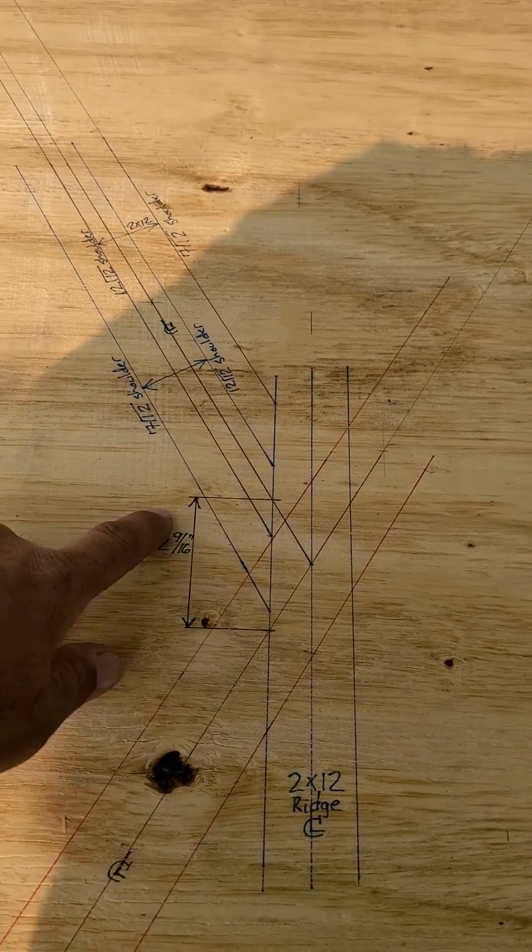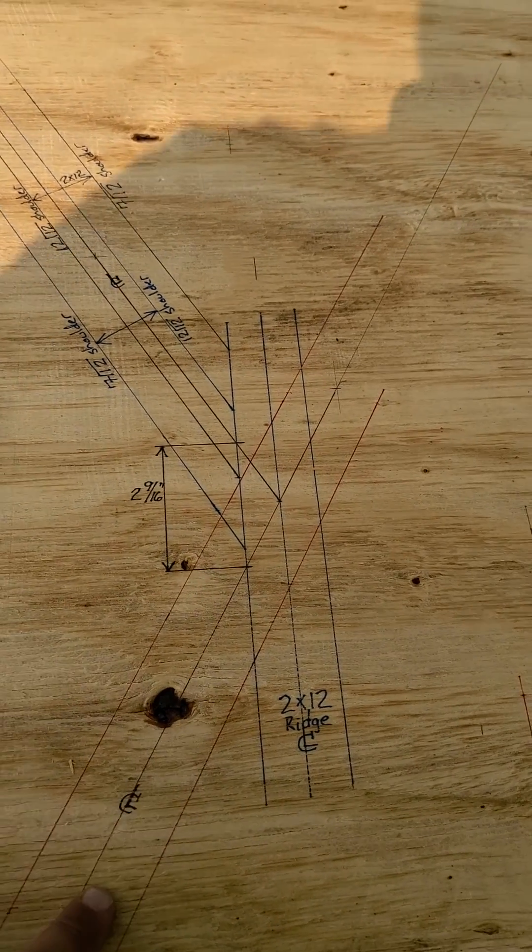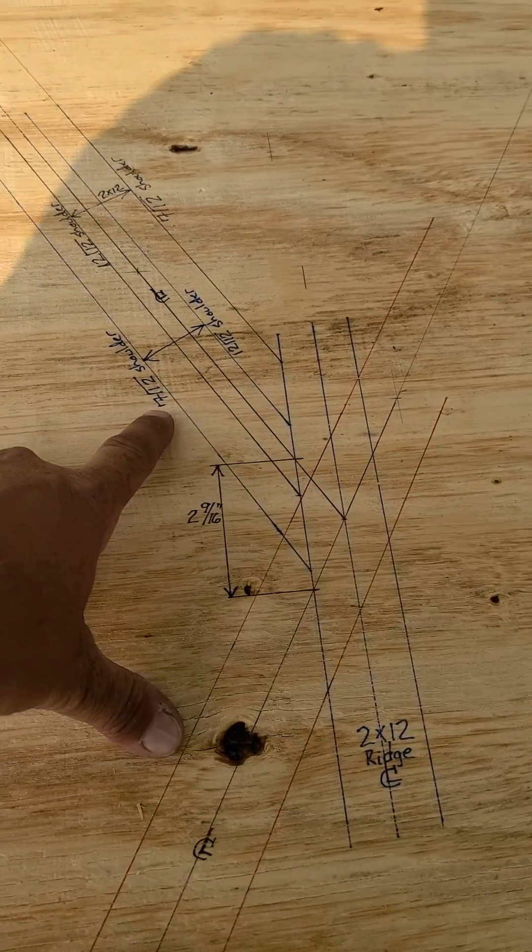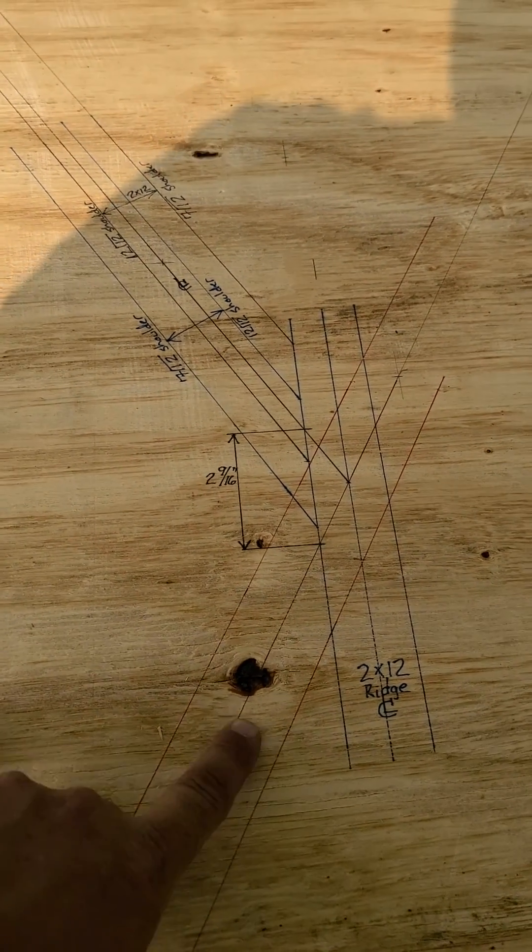These are irregular, 7-12 and a 12-12 sharing a hip. Same with the valley. In this situation, the major pitch, the 7 side sharing this irregular valley.